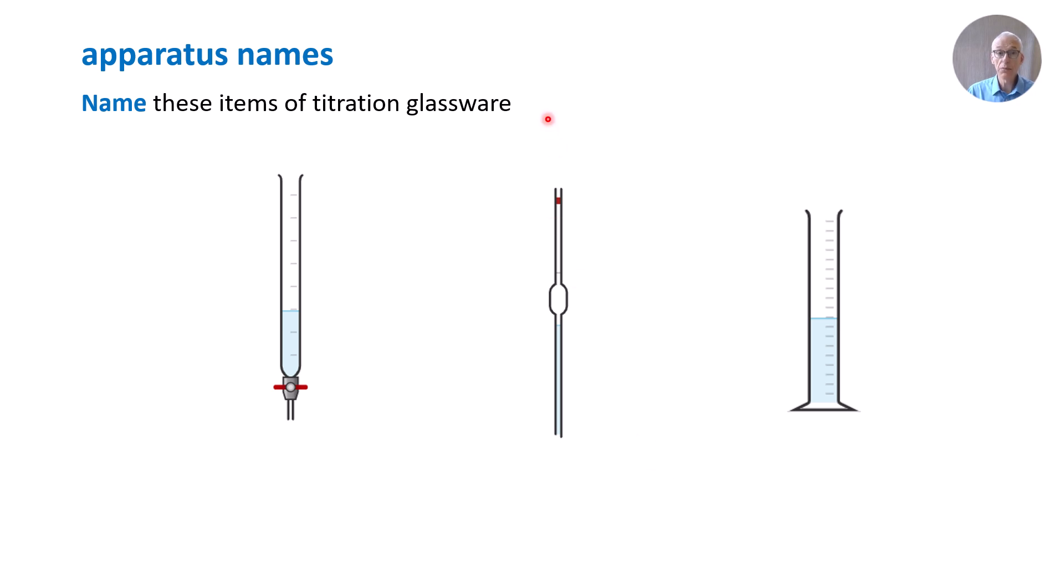Knowing the names of various bits of glassware often examined in paper 6, so can you name these three pieces of glassware? Here we have a burette, a volumetric pipette, and a measuring cylinder.